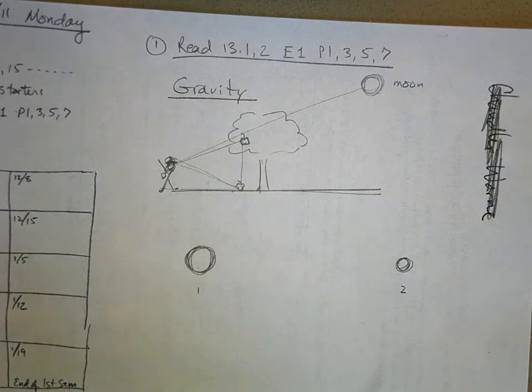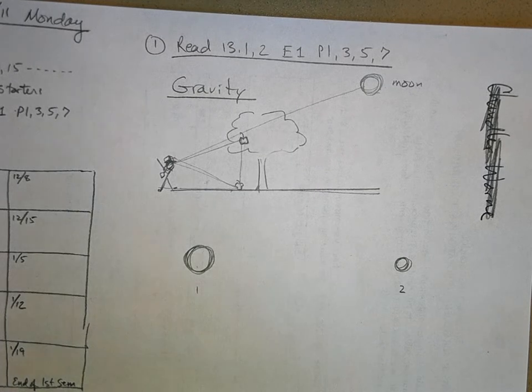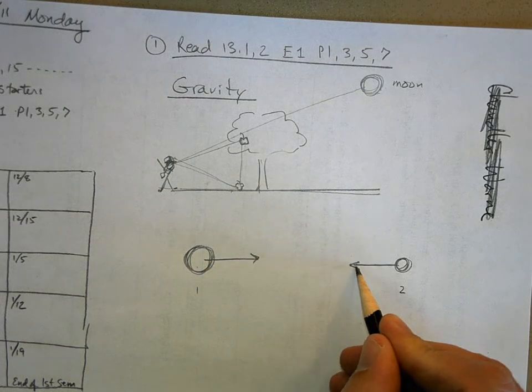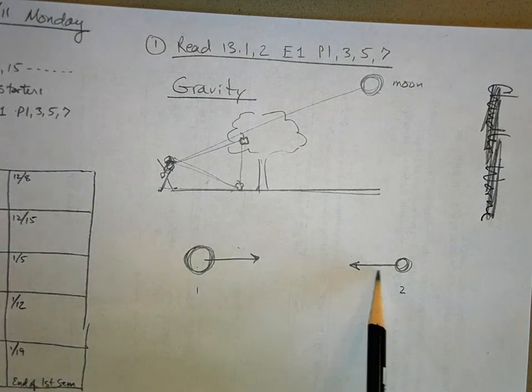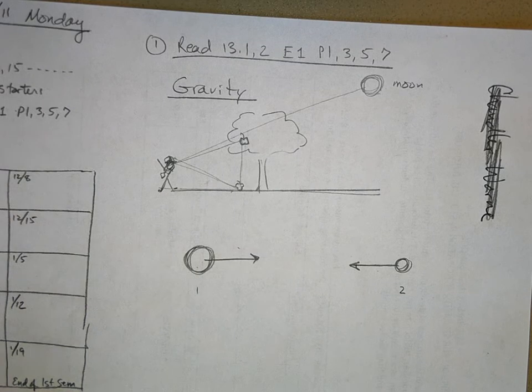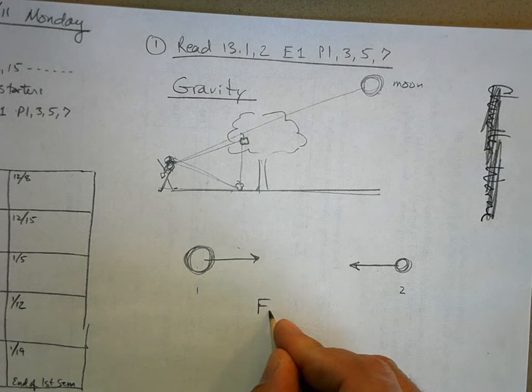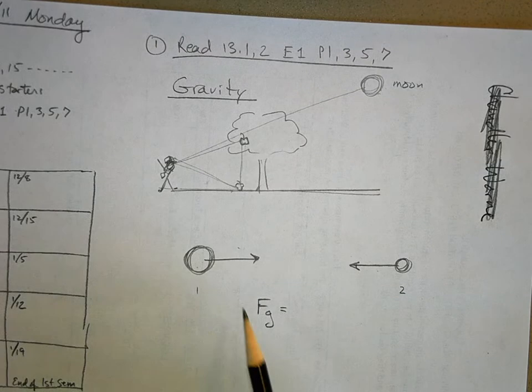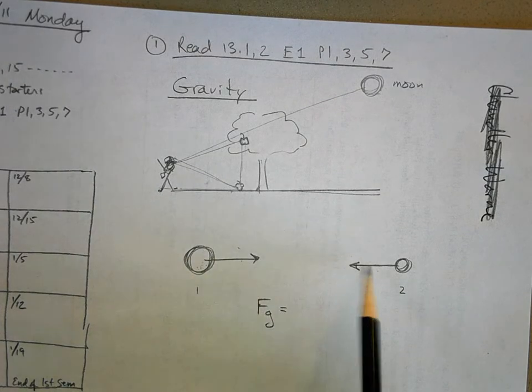This object has mass, this object has mass. They apply equal and opposite forces to each other. So the moon applies a force to the earth, the earth applies a force to the moon. Now the amount of force, the magnitude of that force, we call F sub g, is equal to, well first of all it's proportional to this mass. If I double this mass I'll double these forces.